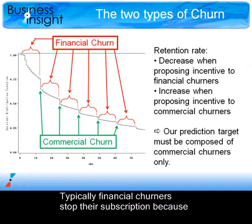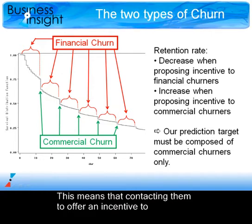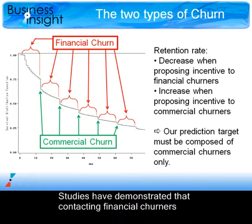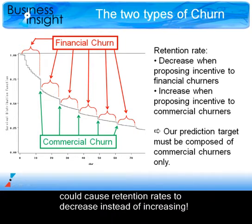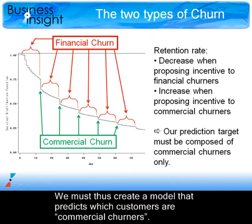Typically, financial churners stop their subscription because they have no more money. This means that contacting them to offer an incentive to continue their subscription would be useless and even counterproductive. Studies have demonstrated that contacting financial churners could cause retention rates to decrease instead of increasing. This is exactly the opposite of the effect that we want to obtain. We must thus create a model that predicts which customers are commercial churners.